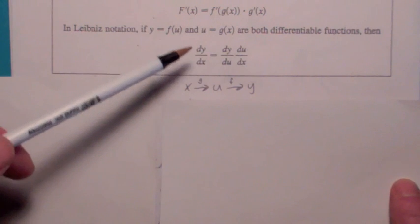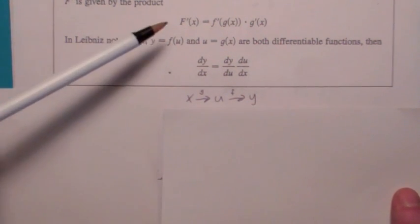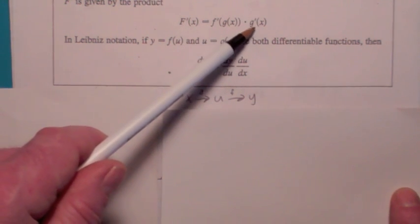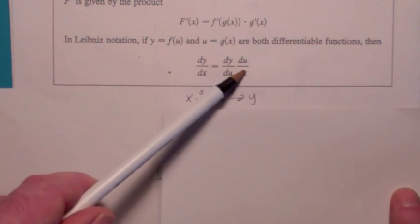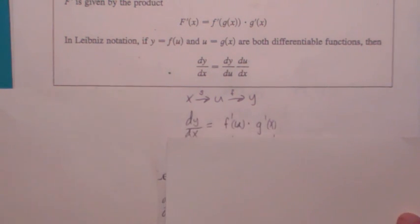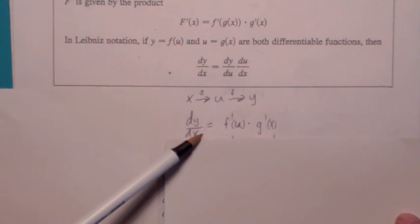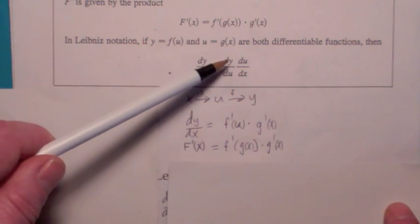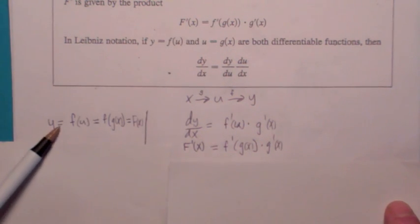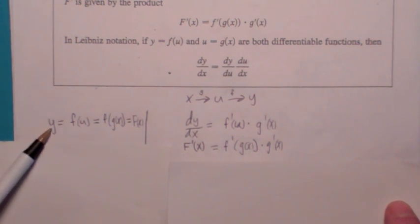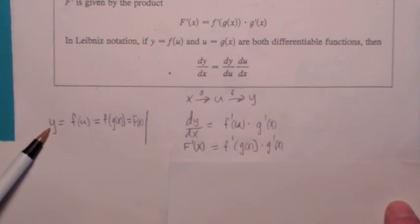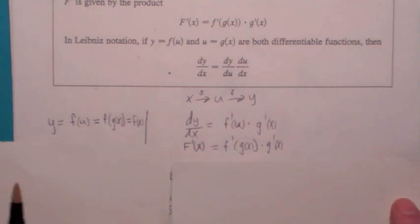I want to point out right away that these two versions are saying the exact same thing. If u equals g of x, then du/dx is g prime of x. So the factor g prime of x is exactly the same as the factor f prime of g of x. Furthermore, since y is f of u and u equals g of x, y equals f of g of x, which is exactly what we're calling capital F of x. So dy/dx, the derivative of y with respect to x, is the same thing as capital F prime of x. So these two versions of the chain rule are saying the exact same thing.